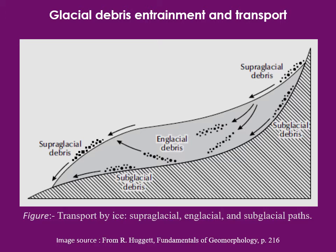If we look at the transport mechanisms of glacier, the glacier transports detrital rock fragments by three ways. The first is the subglacial process, or these debris are known as subglacial debris, in which the eroded or fragmented rock particles are carried along the glacial base. These rock particles are always in contact with the bottom surface and this is known as subglacial debris.